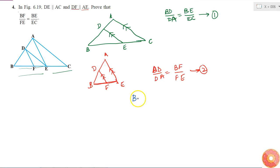BE by EC, that is BD by DA is equal to BE by EC, is also equal to BF by FE, right. So what have I proved? I have proved that BF by FE is equal to BE by EC. This is what I have to prove.